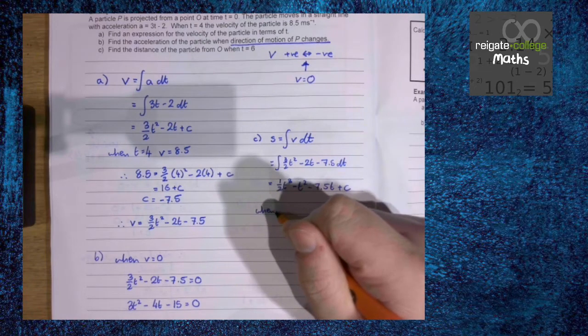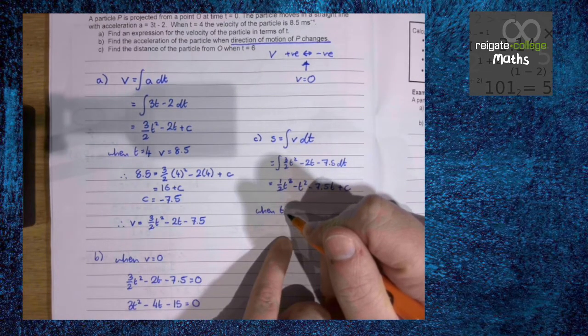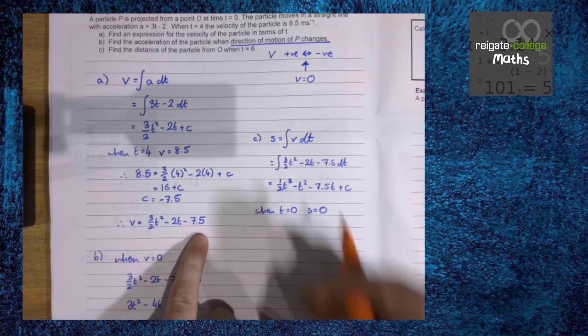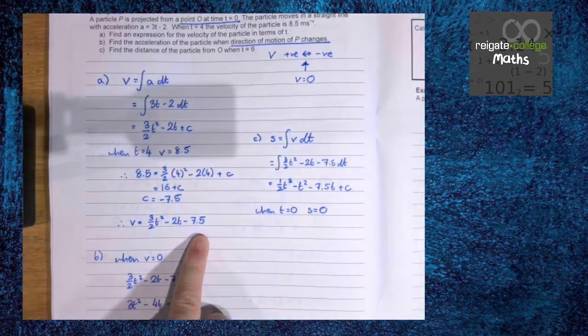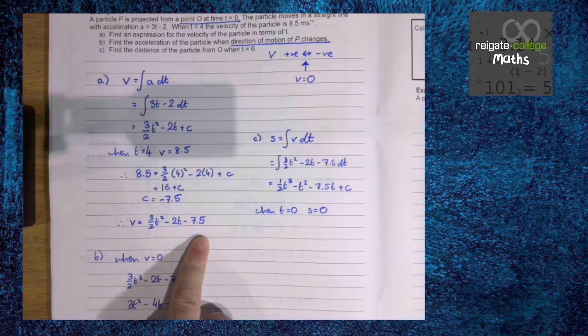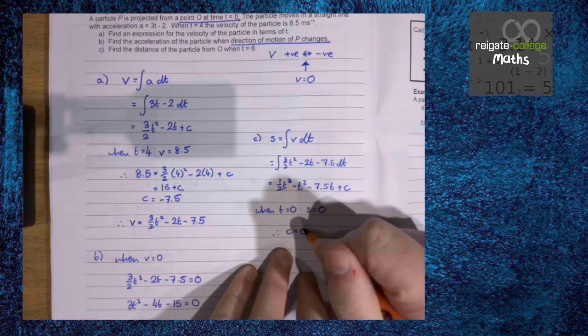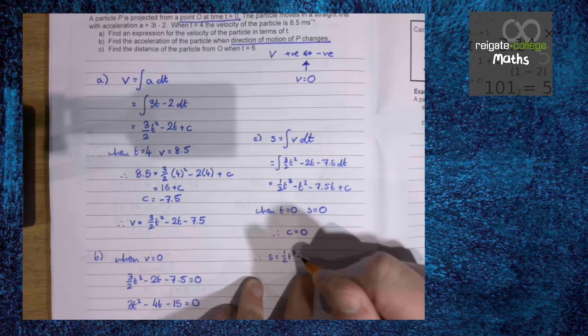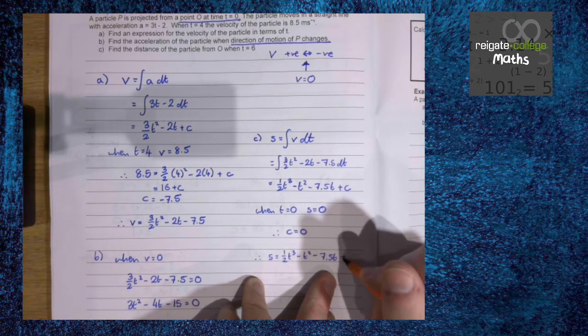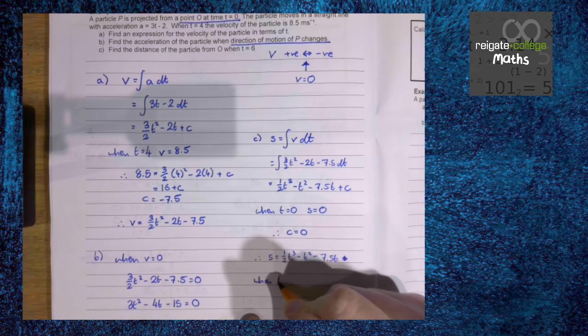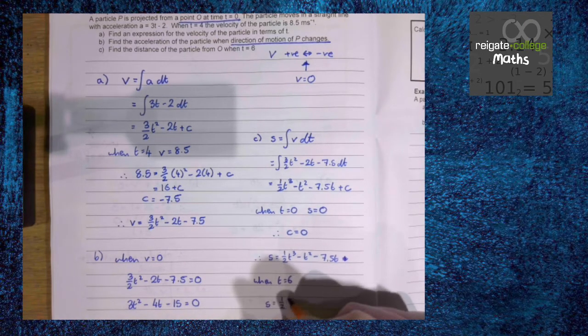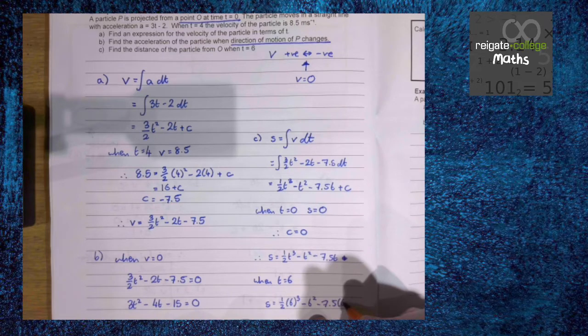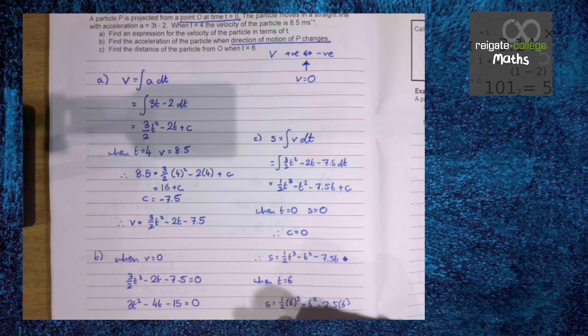When t equals 0, the displacement equals 0. How do we know that? It's projected from a point O at time t is 0. So the displacement is 0 when t is 0, which means that c is 0. So therefore, s is a half t cubed minus t squared minus 7.5t plus 0. When t equals 6, s equals a half times 6 cubed minus 6 squared minus 7.5 times 6, which we stick in our calculator, and we get that it's 27 meters.